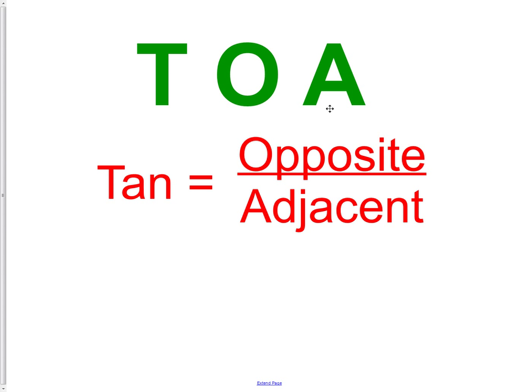Lastly, we have TOA. Tangent is the opposite over the adjacent. Again, the opposite is opposite the angle we're at, the opposite leg over the adjacent leg, or the adjacent leg next to the angle we are talking about.